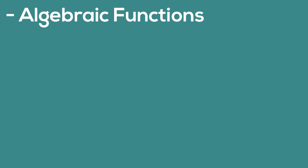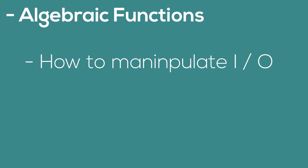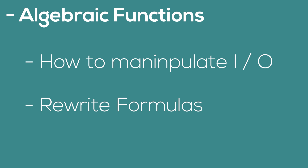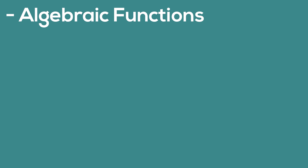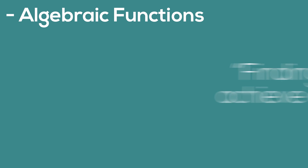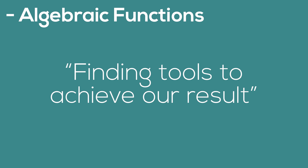Next, an understanding of algebra and functions is really important because it teaches us how we can manipulate inputs and outputs, and how we can rewrite formulas to get what we want. The classic formula for getting the y position based on an x input is y = mx + b. However, if we wanted to instead get the slope, we would need to rewrite this as m = (y - b) / x for the computer to calculate it. Being able to do this type of rearranging will help in the third step of our problem solving, as it's often necessary to get the output we need.